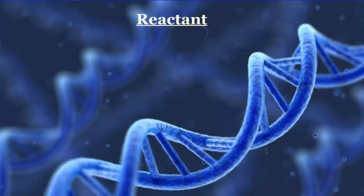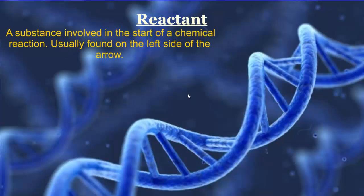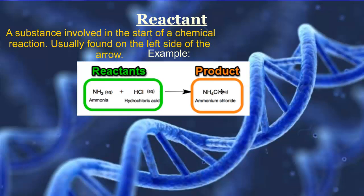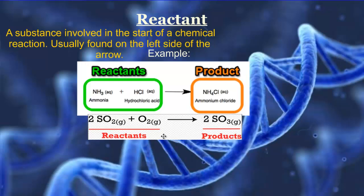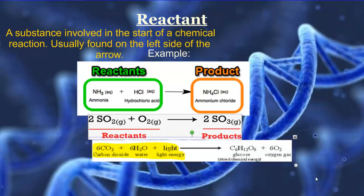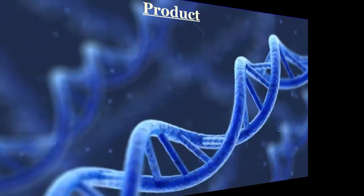A reactant is a substance involved at the start of a chemical reaction, usually found on the left side of the arrow. For example, in the equation for ammonia being added to hydrochloric acid to give ammonium chloride, the reactants are ammonia and hydrochloric acid. In the photosynthesis reaction, the reactants are carbon dioxide, water, and energy.